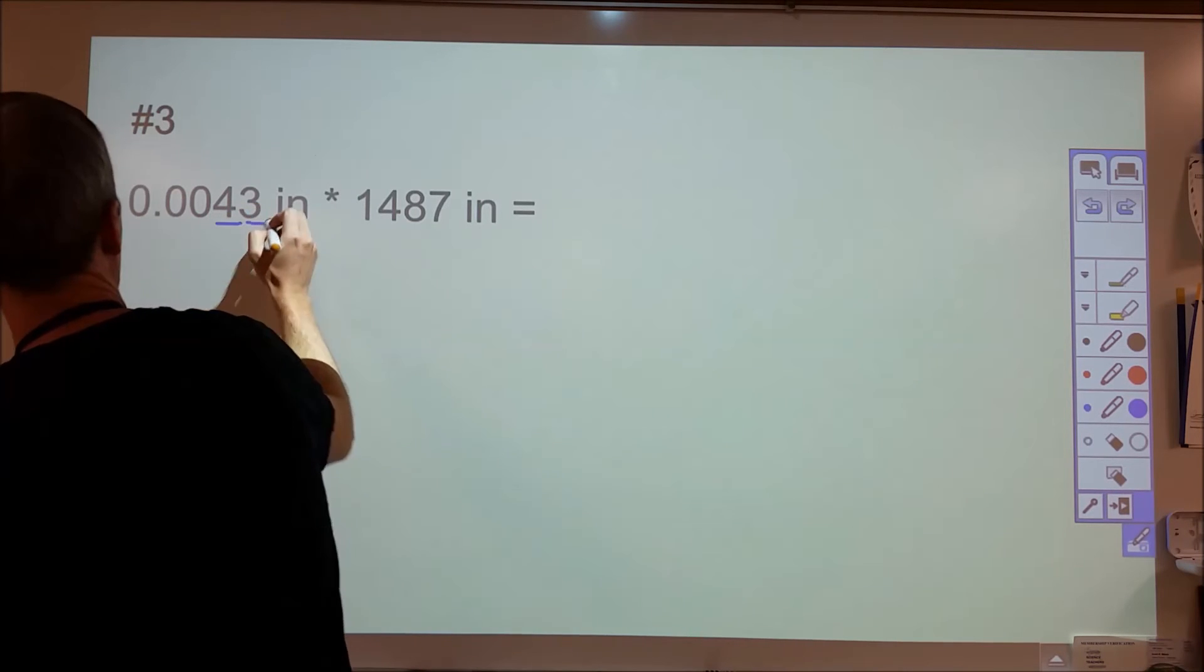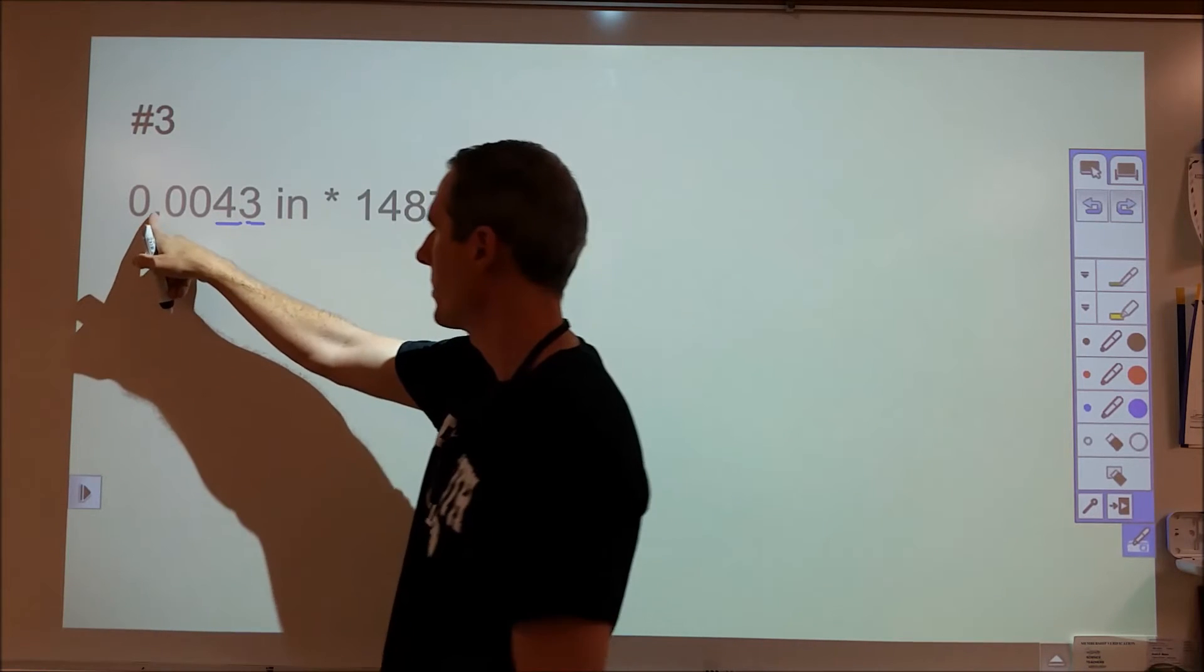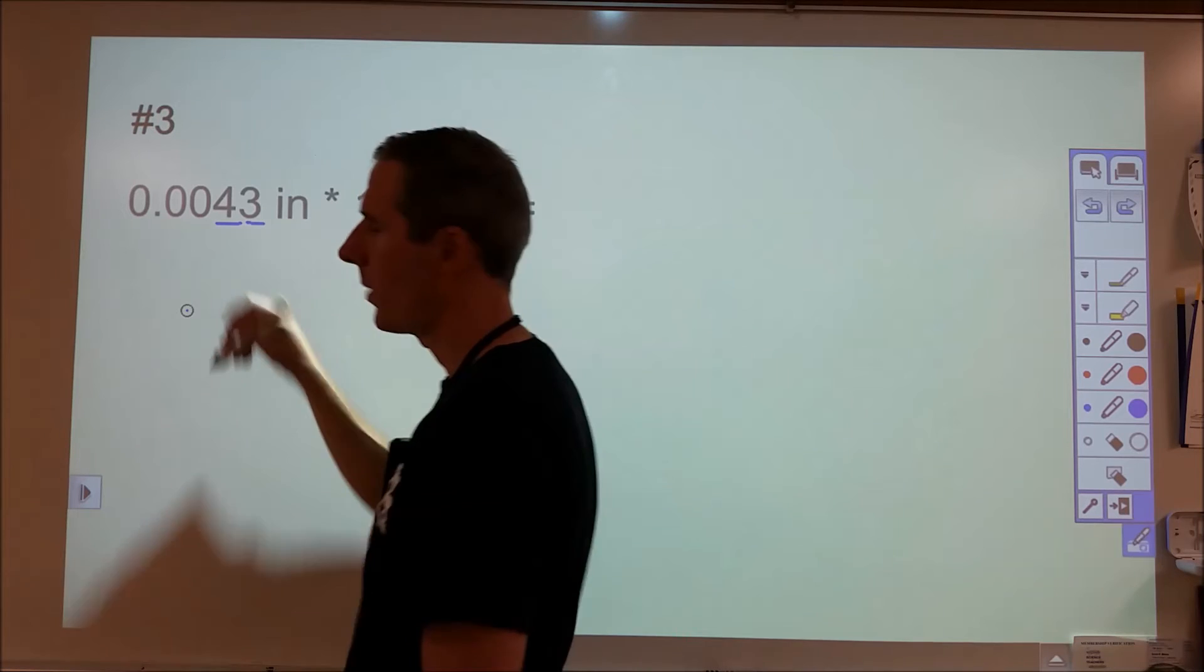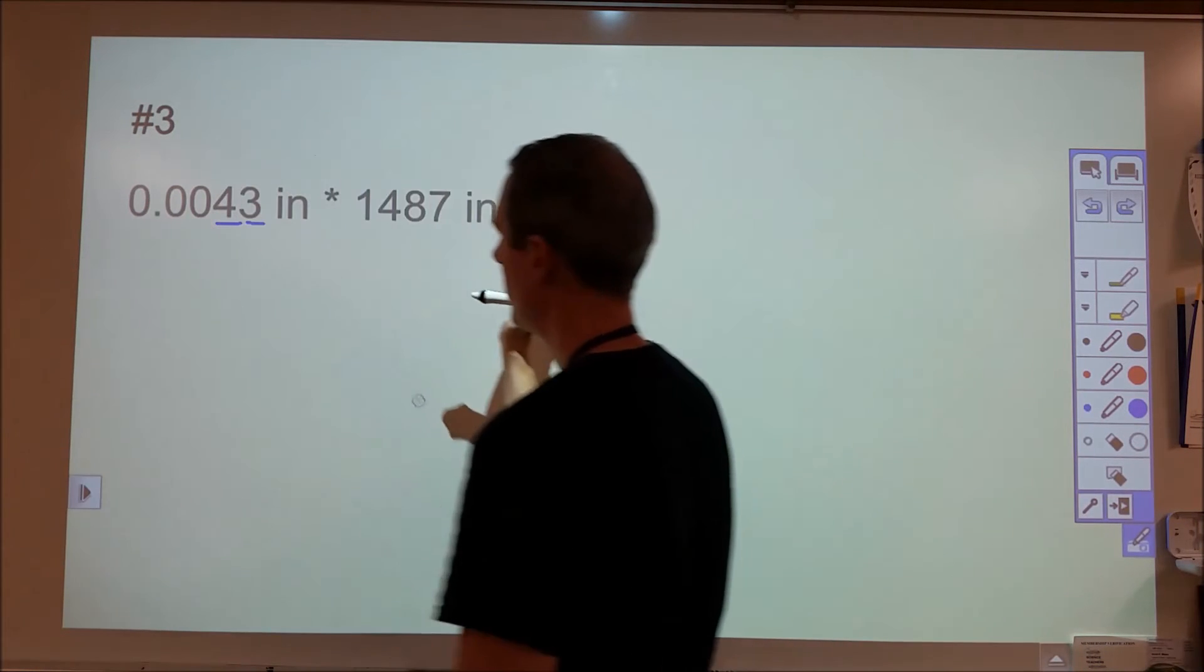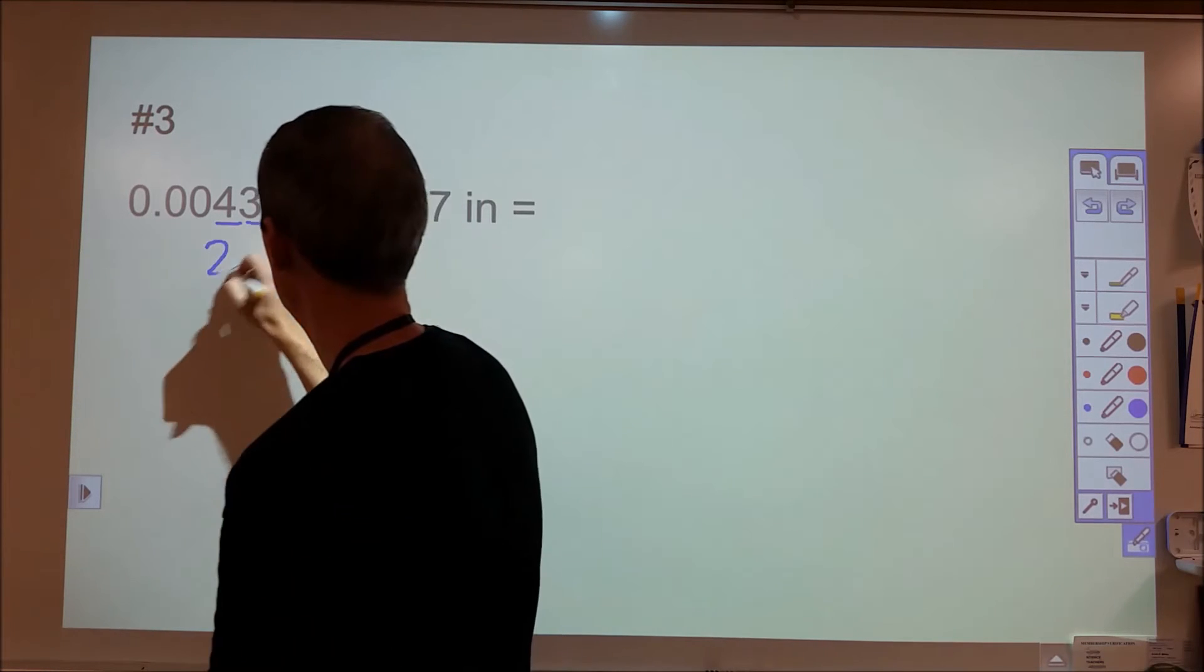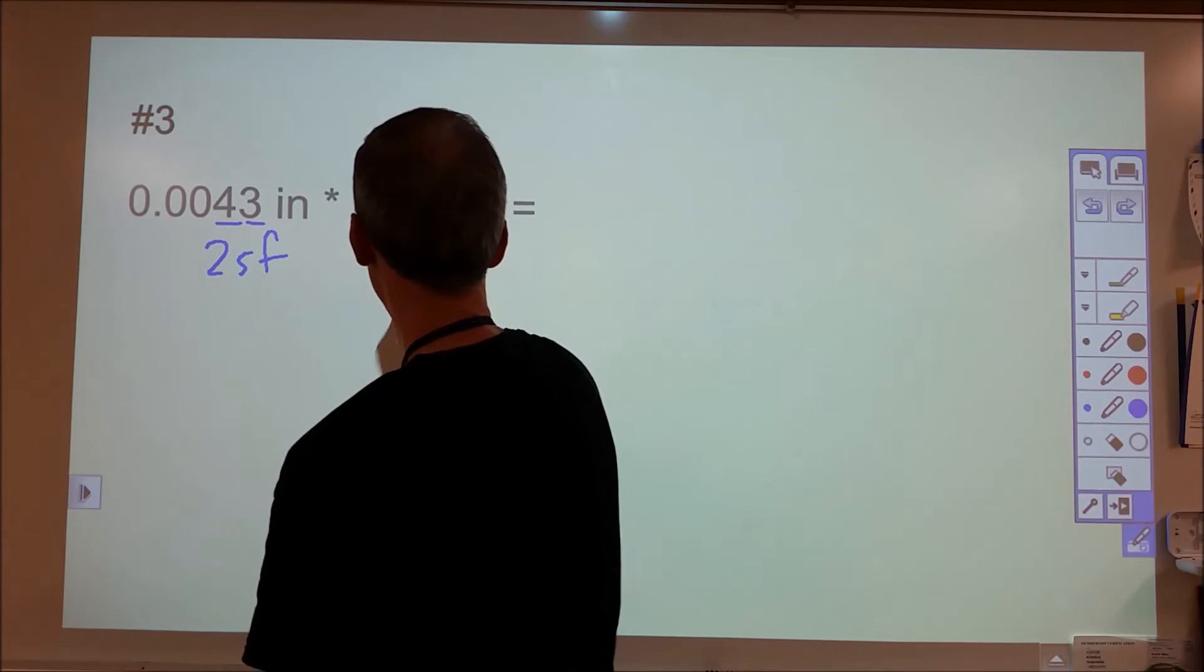Multiplying. So here we have to be careful. These zeros are not significant. A lot of people will confuse this because there's a decimal and the zeros are to the right. It's not where you are in relation to the decimal, it's is there a decimal and are the zeros to the right of the numbers. So this would just be two sig figs and this would be four sig figs.